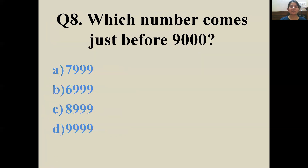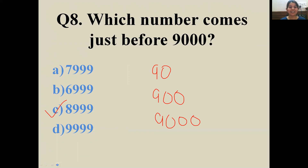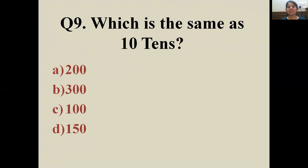Next up, question number eight: which number comes just before 9000? Not tricky — easy for those who have been practicing counting. Think: what comes before 90? 89. Before 900? 899. So what comes before 9000? Yes — 8999. Very good!